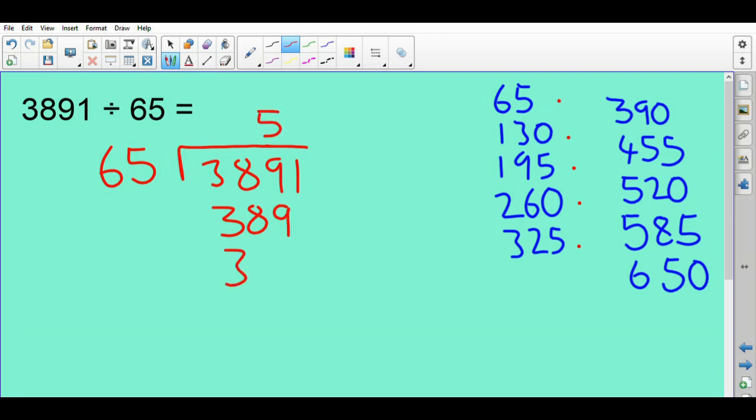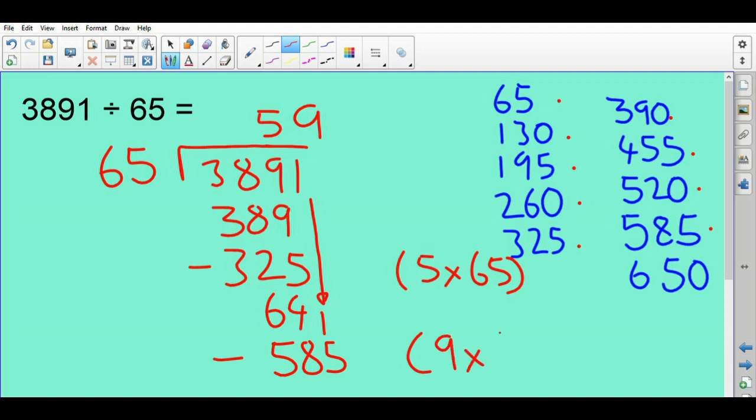65 into 389 I can do. One, two, three, four, five. Which takes me to five there, so I'm going to then take away 325 because that's that multiple, that's five lots of 65. That leaves me with 64, bring this one down like so. 65 into 641, I'm going to go one, two, three, four, five, six, seven, eight, nine. So 59 like that. 585 is what I'm going to subtract there.